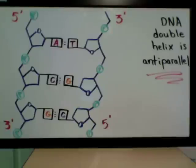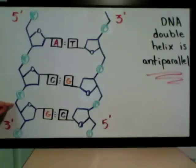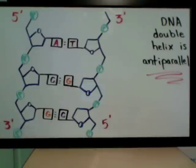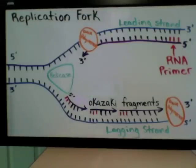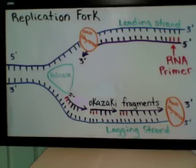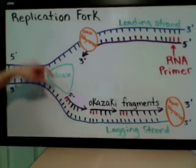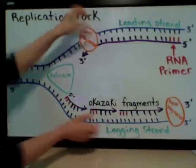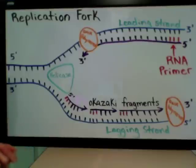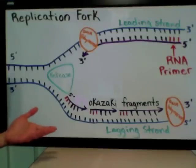DNA polymerase can only add a nucleotide to the 3' carbon. It cannot add a nucleotide to the 5' carbon, so it can only build a new strand of DNA in one direction. This is important to remember because it's the reason for there being a leading strand and a lagging strand when DNA is replicated. In order for DNA to be replicated, it has to be opened up — the two strands have to separate — and the enzyme that separates the double helix is called a helicase. Then there are other enzymes that hold it open and prevent it from degrading, called single-stranded binding proteins.